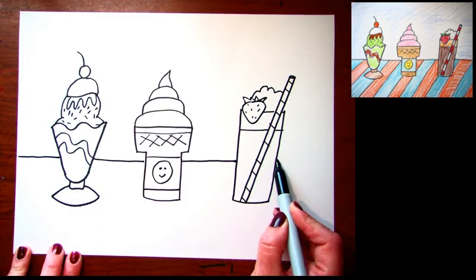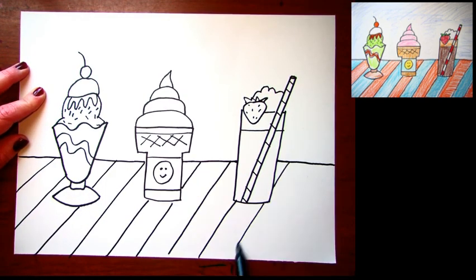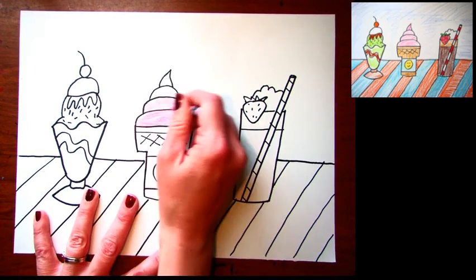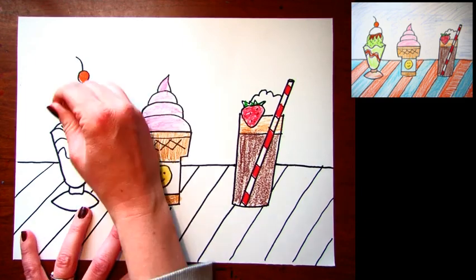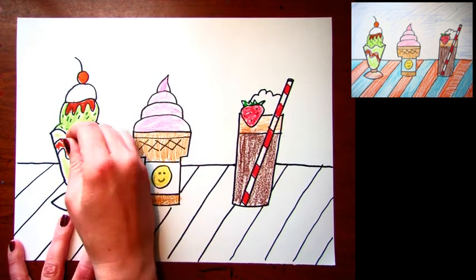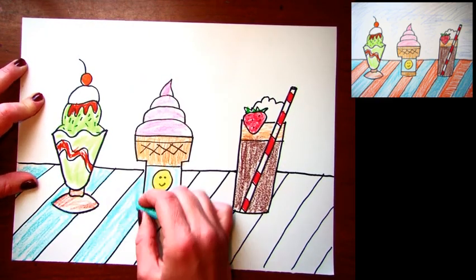This is when you guys can stop drawing along and just watch the rest of the video. I'm gonna give you some ideas for coloring. I'm gonna add a little tablecloth in the background and I'll probably color mine pretty realistically today. I like mint chocolate chip ice cream. What kind of ice cream will you make yours?